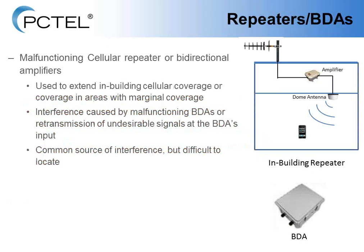Another large source of interference is repeaters or bidirectional amplifiers (BDAs). These are malfunctioning cellular repeaters used to extend in-building or marginal coverage. The interference is caused by malfunction of these devices or the retransmission of undesirable signals that the BDA picks up, amplifies, and retransmits into the mobile network. This is a very common source of interference, but also a very difficult interferer to actually locate.